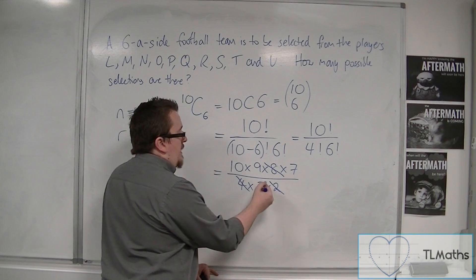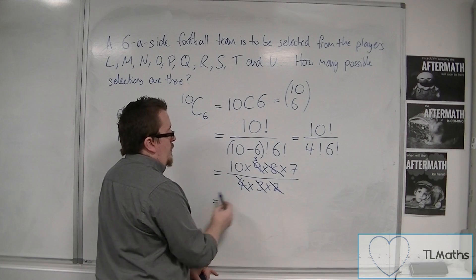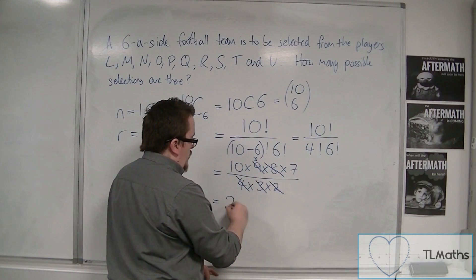And the 9 divided by 3 is just 3. So I've actually got 10 times 3 times 7, which is 210.